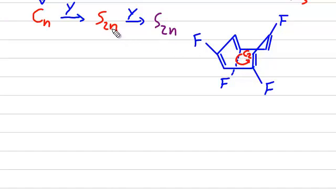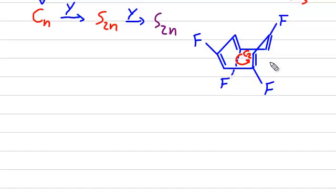2 times 2 is 4, meaning if we rotate the molecule by 90 degrees — just imagine you rotate the entire molecule by 90 degrees counter-clockwise — this fluorine atom moves here, and then afterwards you do a reflection. Then this fluorine atom, which is now here, would become this fluorine atom down here. Indeed, there is a rotary reflection symmetry operation possible, and this molecule is identified by the point group S4.